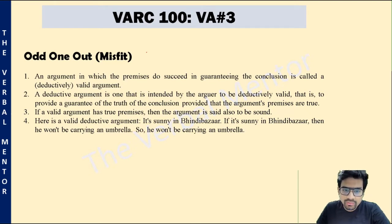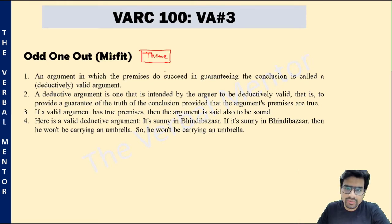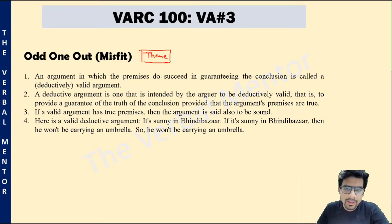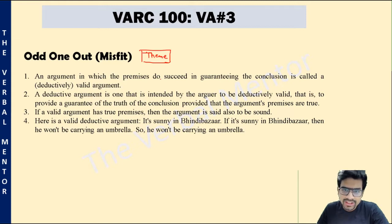The approach we are going to use for this odd one out question is theme-based. We are going to identify the theme of discussion for each of these four sentences and then identify the one whose theme is out of sync from the rest of the three.